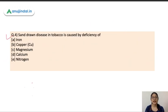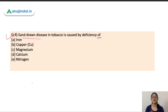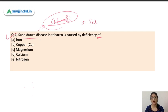Question number four: sand drawn disease in tobacco is caused by the deficiency of which nutrient — iron, copper, magnesium, calcium, or nitrogen? These are very important essential nutrients that play certain functions in plant physiology. In the absence of adequate amounts, the plant shows symptoms indicating deficiency. Sand drawn disease is essentially the chlorosis of leaves, where leaves become pale and yellowish, and in extreme deficiency may turn white. This symptom is mainly due to magnesium deficiency.